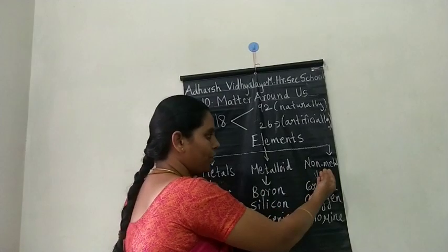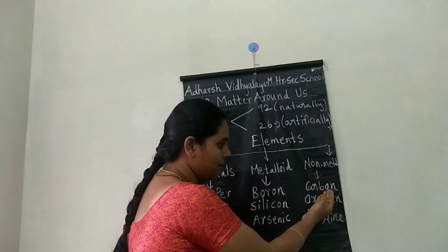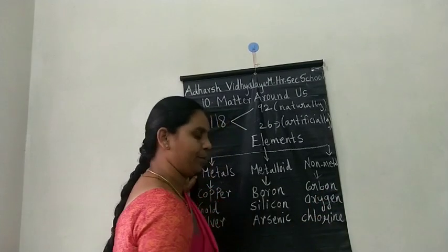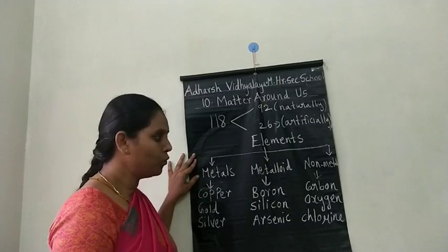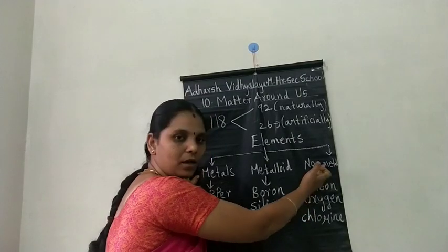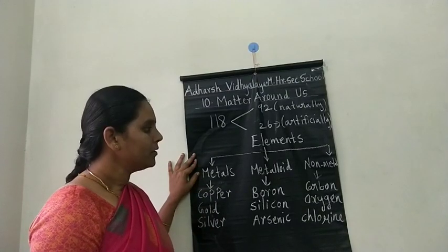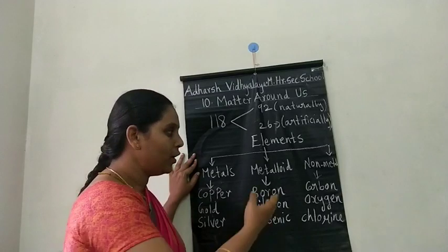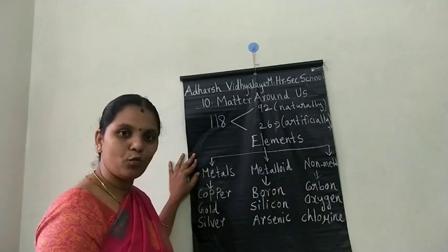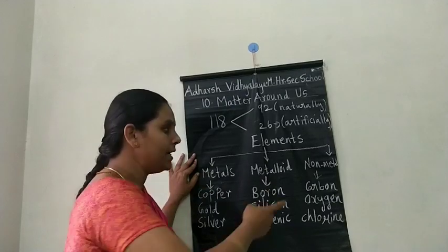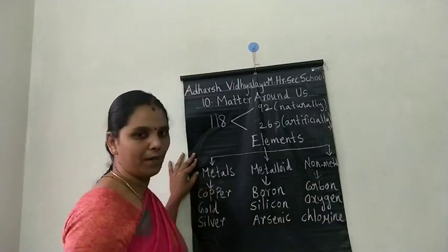Examples of non-metals are carbon, oxygen, and chlorine. Most gases come under the category of non-metals. Non-metals have very low melting and boiling points, cannot be converted into wire or sheet form, and do not conduct heat and electricity.